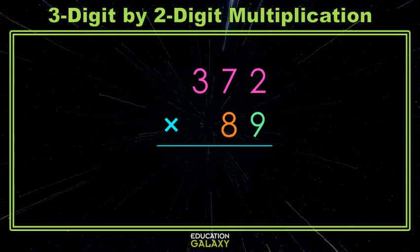We'll start by multiplying 372 by 9. So 2 times 9 is 18. We leave the 8 and carry the 1. 7 times 9 is 63, with the 1 we carry is 64. We leave the 4 and carry the 6. 3 times 9 is 27, plus the 6 we carried is 33, and we can just put that here. And if you'd like, you can put a comma.